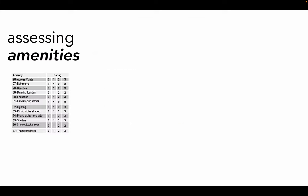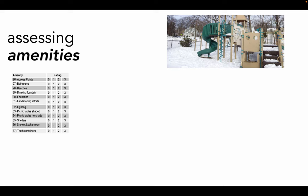As with features, the amenities section of the PARA instrument measures the overall attractiveness of the resource you're auditing for community physical activity. Resources might encourage physical activity if they contain lots of good quality amenities like easy access points, bathrooms and water fountains, lighting, landscaping, and places to rest.